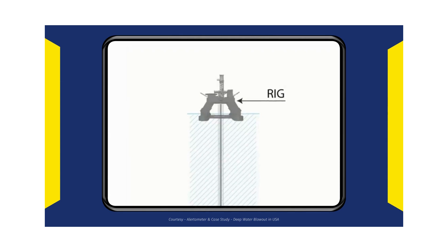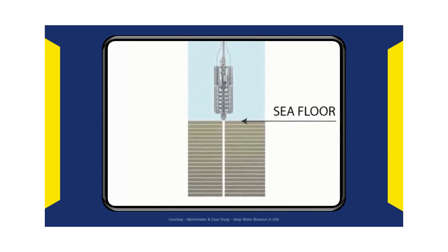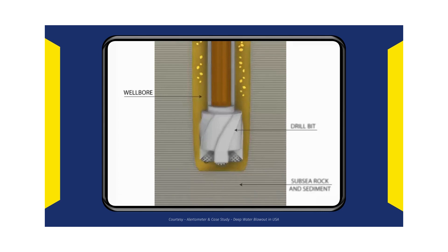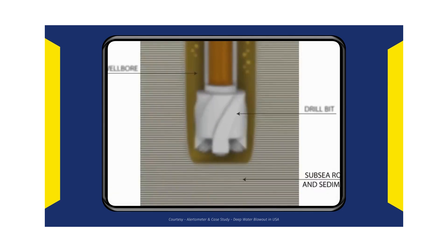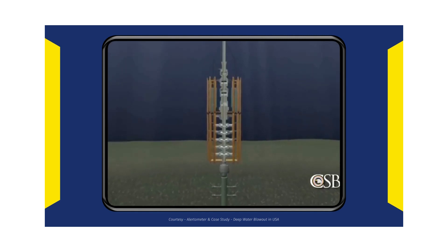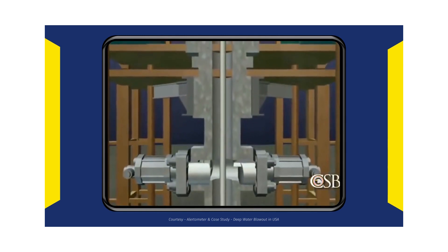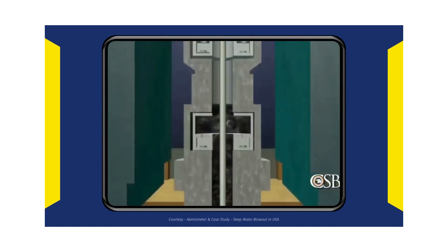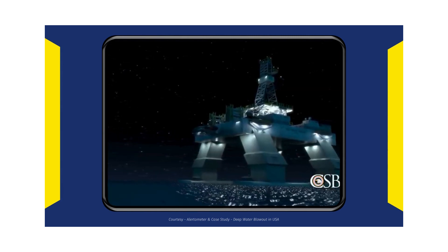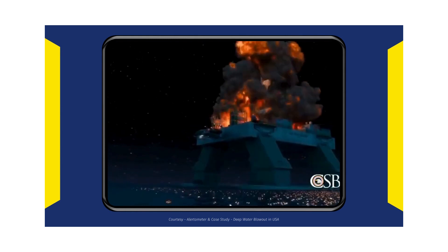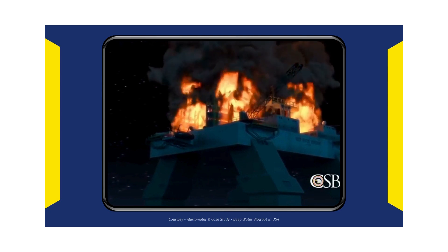Drilling an offshore well involves creating a pathway between the drilling rig and oil and gas reservoirs trapped beneath the sea floor. A deep hole, or wellbore, is drilled through layers of subsea rock and sediment, which can contain trapped water, crude oil, and natural gas under pressure. An unplanned flow of these well fluids into the wellbore — known as a kick — can be dangerous. Without careful management, a kick can lead to a blowout: the uncontrolled release of flammable oil and gas from the well, which can be catastrophic as oil and gas reaching the drilling rig can quickly find an ignition source, leading to a fire or explosion endangering the drilling crew.